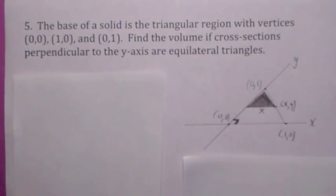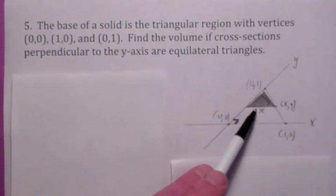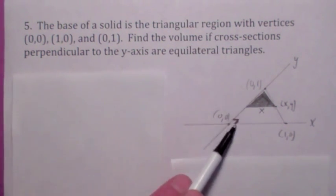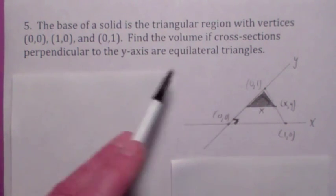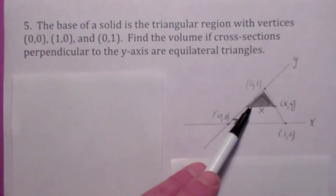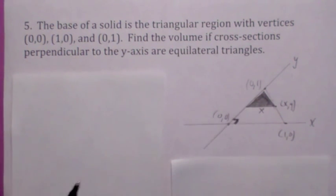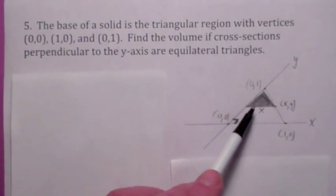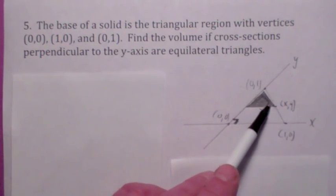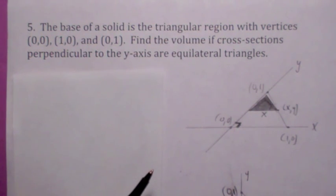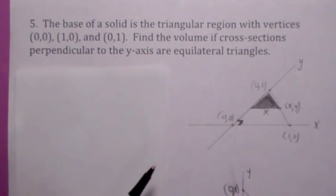Now we're in the xy-plane with an isosceles right triangle as the base, and cutting perpendicular to the y-axis gives equilateral triangles as cross-sections. Since we're perpendicular to the y-axis, the thickness is Δy — a dy integration. I need to find the area of each cross-section. Notice the base of the equilateral triangle is the x-coordinate, so all sides are x.